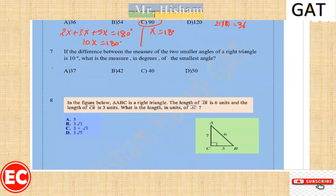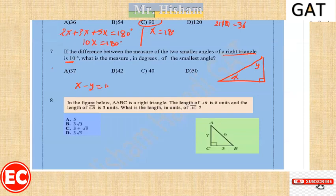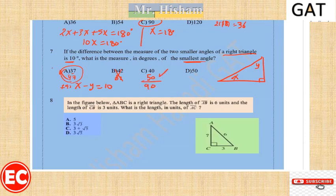Question seven: the difference between the two smaller angles in a right angle triangle is 10. In a right triangle, the two smaller angles sum to 90. If the smallest is 40 and the greatest is 50, their difference is 10 and their sum is 90 degrees. So the smallest angle is 40 degrees.